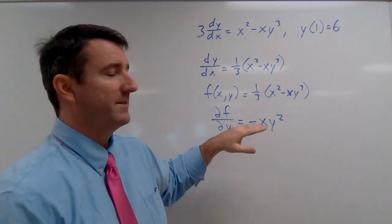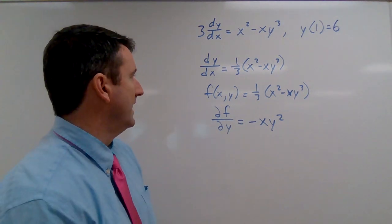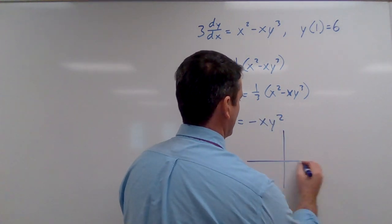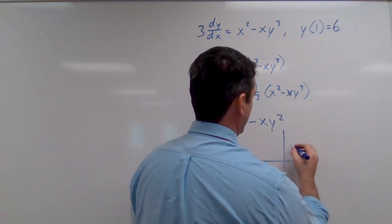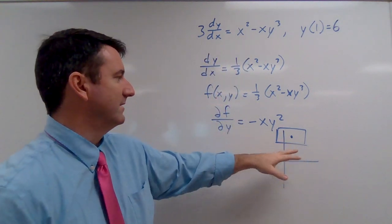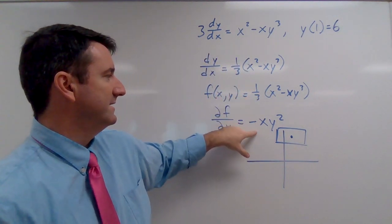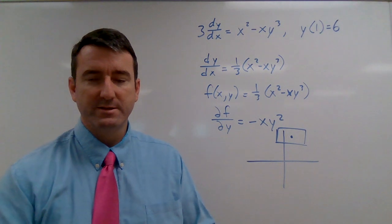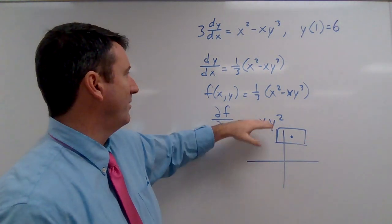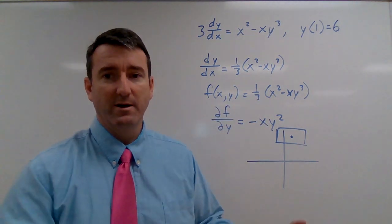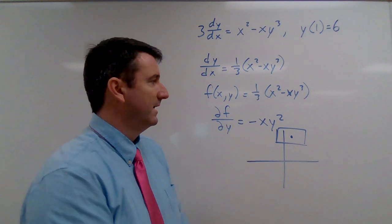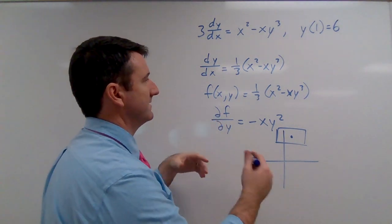And we can see that if we've got some rectangle containing the point one six—can we draw some rectangle where both of these would be continuous through that rectangle? Well, yeah, both of these are going to be continuous everywhere. So, of course, we can draw a rectangle around that point. So the answer to this is yes. Yes, this implies a unique solution.